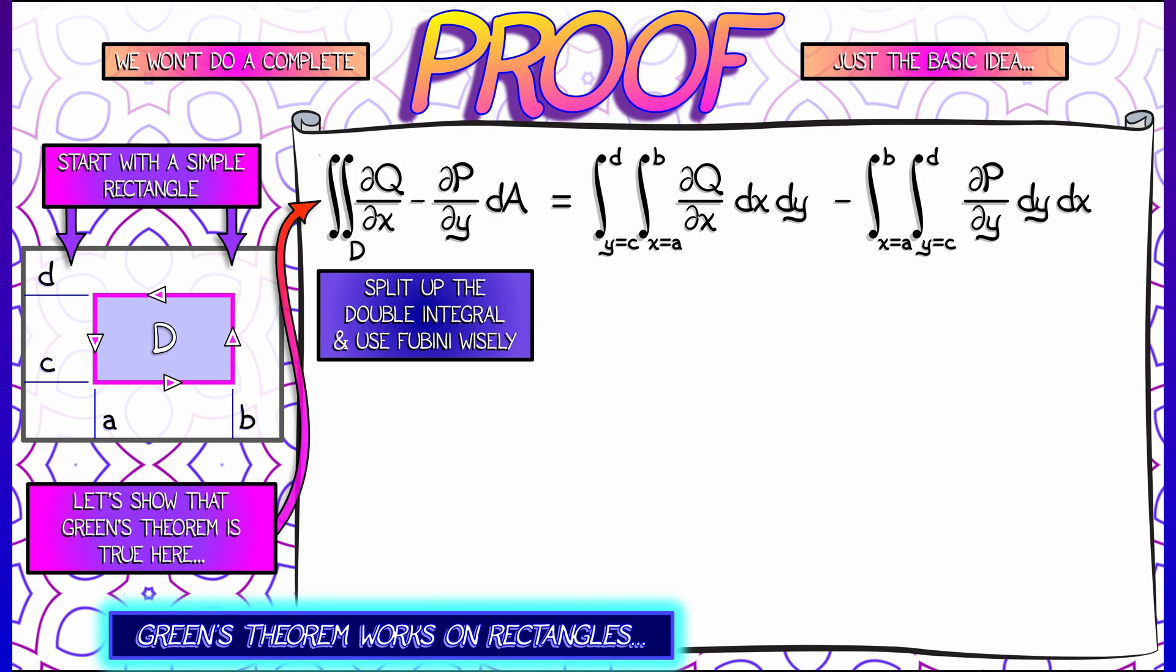Then the second term, the partial of P with respect to y, I'm going to integrate that with respect to y first, and then with respect to x. Here we're using the Fubini theorem in a clever way in order to do these integrals, because when I look at that first term and I integrate ∂Q/∂x dx, I get simply Q. And then I evaluate that as x goes from A to B, and then integrate that with respect to y. For the second term, I have the partial of P with respect to y. When I integrate that with respect to y, I get P.